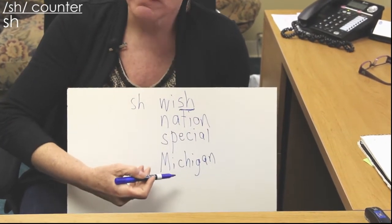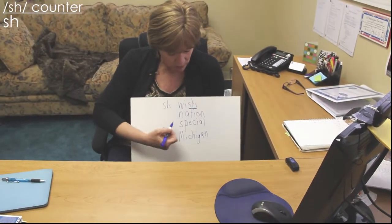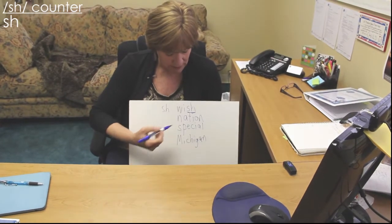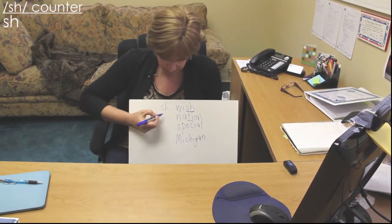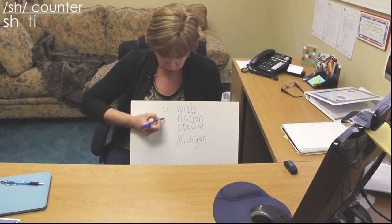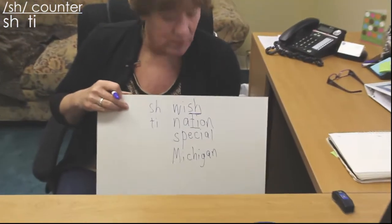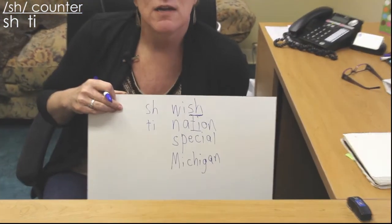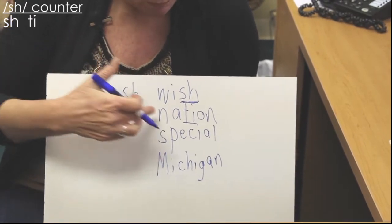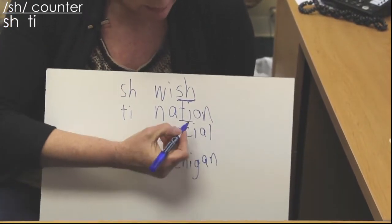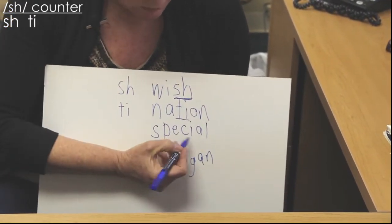But we don't want to use the 'sh' spelling when spelling 'nation,' 'special,' or 'Michigan.' There are different spellings for those. When you look at multi-syllable words like 'nation,' 'ti' is another way to spell 'sh' — this is the most popular way in multi-syllable words, like in 'nutritious,' 'initial,' or 'patient.'